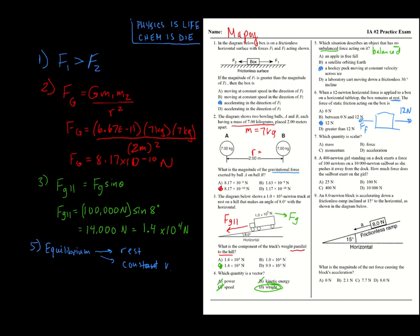Which quantity is a scalar? Scalars have only magnitude. Momentum is a vector, force has direction, acceleration has direction. Mass is the key scalar to know in our unit — you can't change the amount of mass something has; mass stays the same unless something drastic happens. It's the one scalar that's definitely worth knowing.